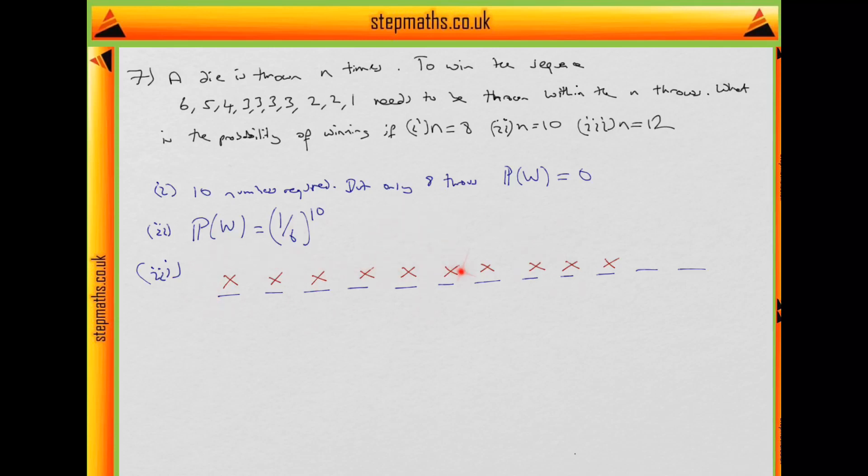We have to have our 10 numbers appearing in 10 consecutive slots in the right order. So the probability of this happening is 1 over 6 to the power of 10. But then what you notice is that we can also have our 10 numbers here, or here.